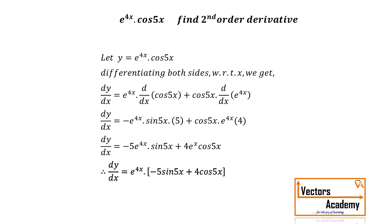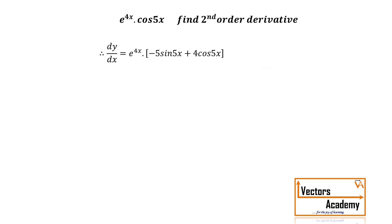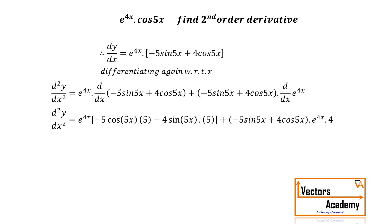Now we have to differentiate this term again with respect to x, so we will have to use the UV rule again. We have e raised to 4x into derivative of that bracket, plus that bracket into derivative of e raised to 4x. Now again differentiating the brackets, applying the chain rule and solving it further, we get an equation.